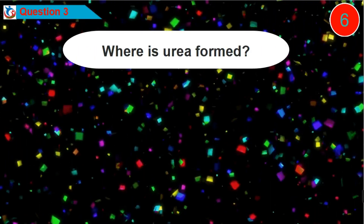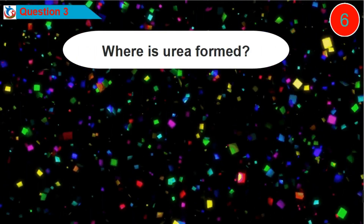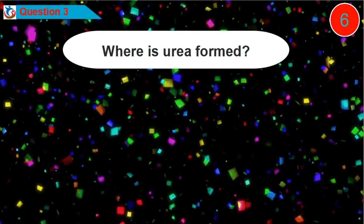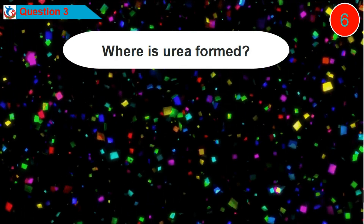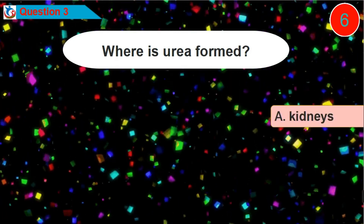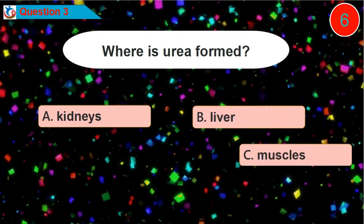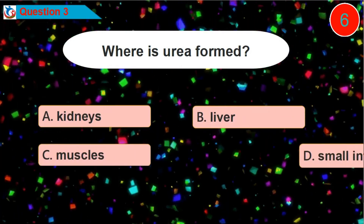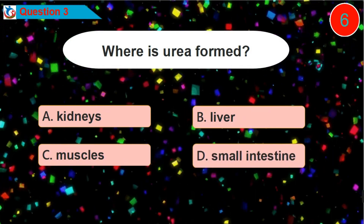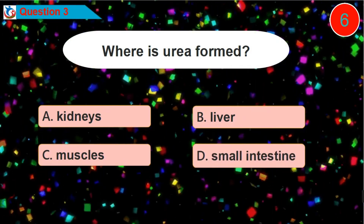Question 3. Where is urea formed? Is it option A, B, C, or D?